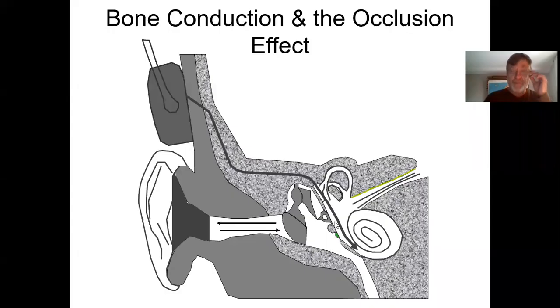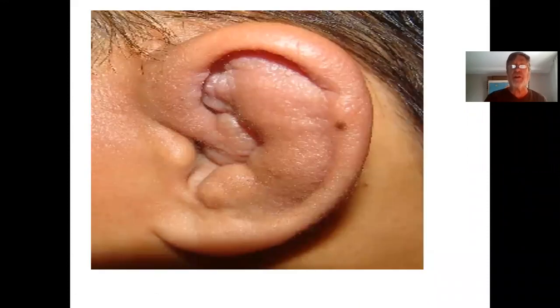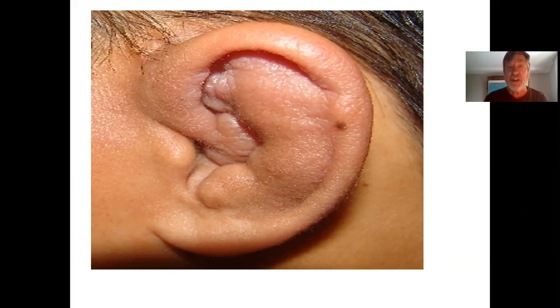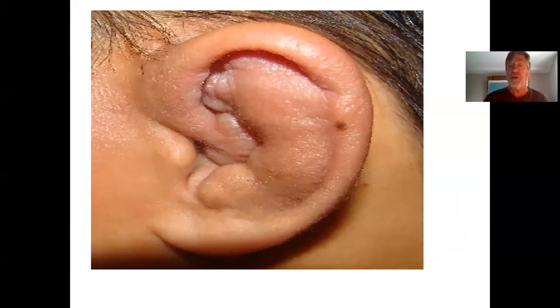A complete plug or blocking of the outer ear canal is called atresia, and it's commonly found with a disorder called Treacher Collins syndrome.